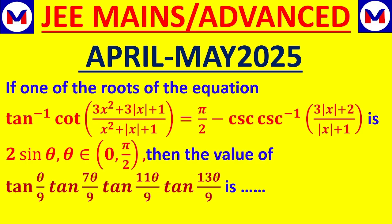If one of the roots of the equation tan inverse of (cot(3x² + 3|x| + 1) / (x² + |x| + 1)) = π/2 − cosec inverse((3|x| + 2) / (|x| + 1)) is 2sinθ, where θ belongs to [0, π/2] (first quadrant), then find the value of tan(θ/9) · tan(7θ/9) · tan(11θ/9) · tan(13θ/9).